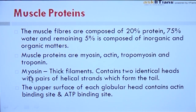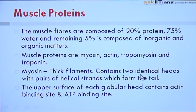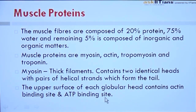Myosin is the compound from which thick filaments are made. So thick filaments are made up of myosin molecules. Myosin contains two identical heads with pairs of helical strands which form the tail. The upper surface of each globular head contains an actin binding site and an ATP binding site. With these sites begins the journey of muscle contraction.